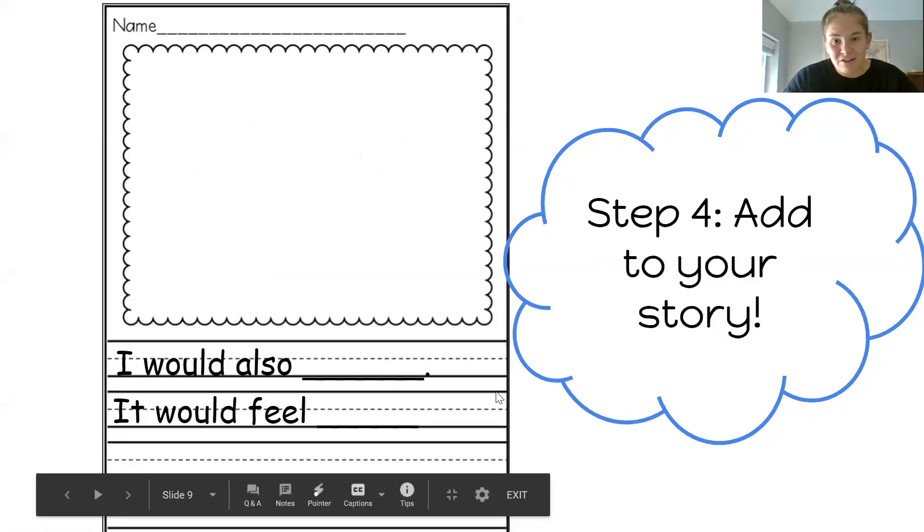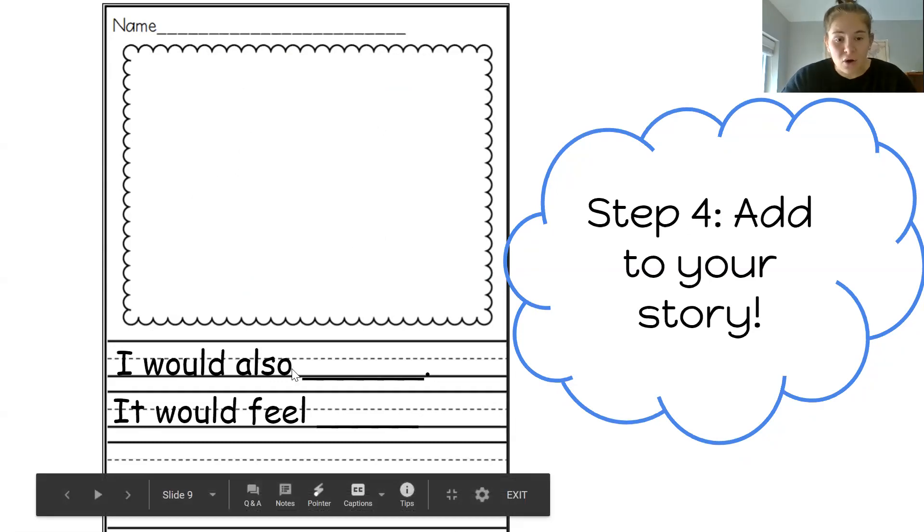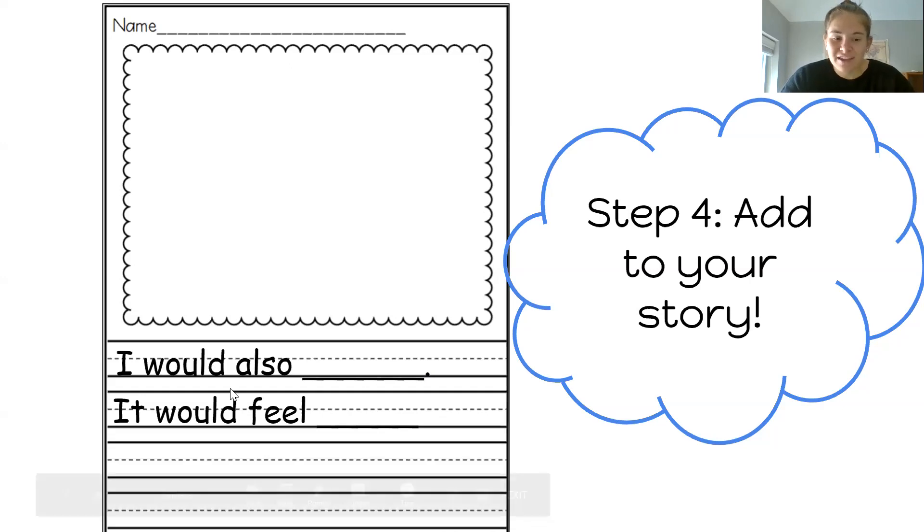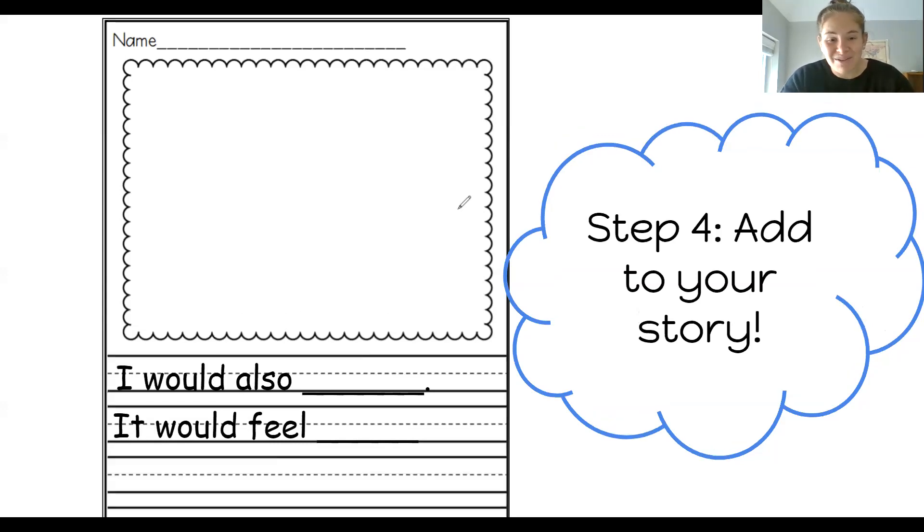Okay, we are moving on to step four. Step four says, add to your story. So we picked our first idea, but I'm sure that you had plenty more ideas of what you would like to do if you could fly with balloons. So you can keep adding to your story on the next page. There's an area where you can draw. Drawing might help you brainstorm. So if you want to draw a picture of you with the balloons doing one of the things that you want to do, you can do that first. And then down here, I have some sentences that might help you come up with ideas. So you could say the sentence, I would also blank blank to give another idea of what you would do. You can also use the sentence, it would feel blank to tell about how you would feel if you got to do this, right?